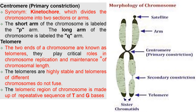The shorter arm of the chromosome is labeled as the P arm. The long arm of the chromosome is labeled as the Q arm. Next are the telomeres — the two ends of the chromosomes are known as telomeres.